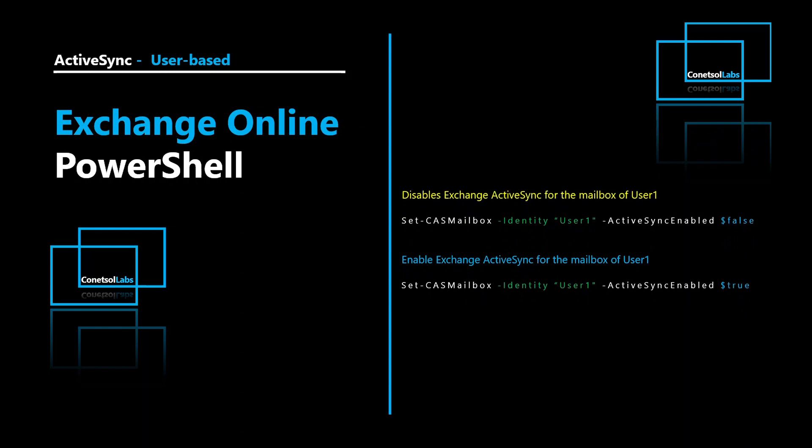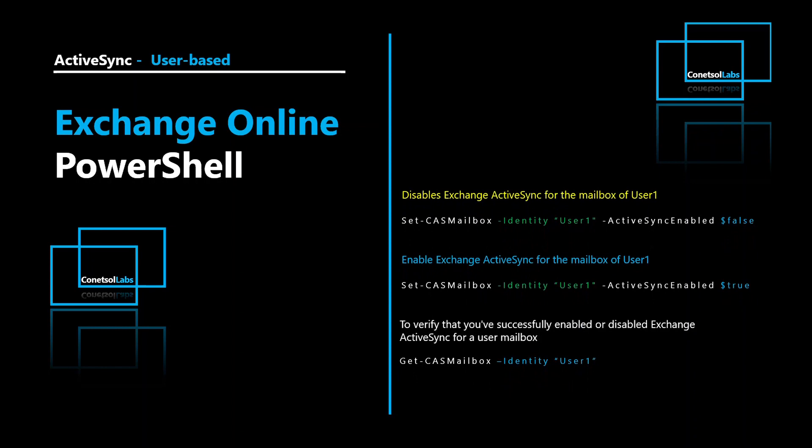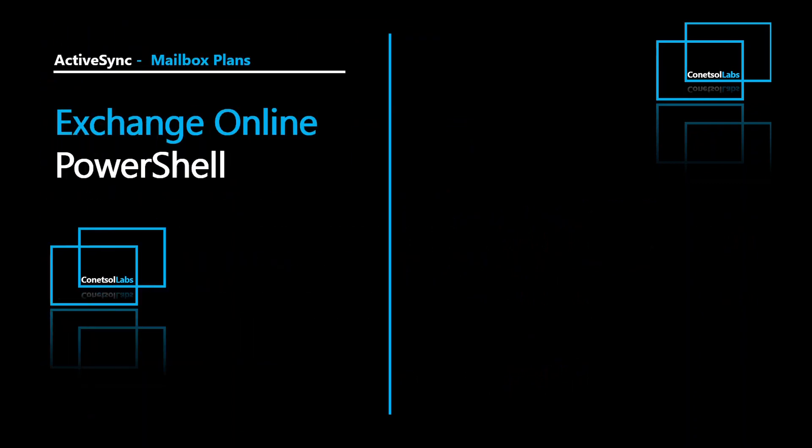This command enables Active Sync for mailbox User1. If we want to verify the changes, the Get-CASMailbox command will return the Active Sync results for a user. For example, if its value is false, that means Active Sync is disabled. If its value is true, that means Active Sync is enabled.